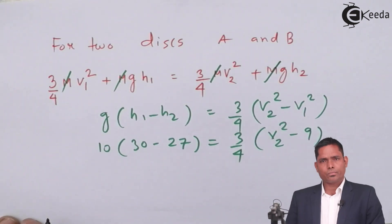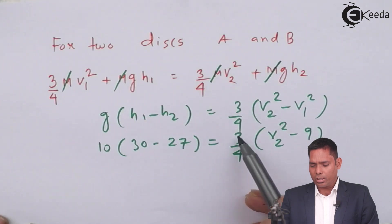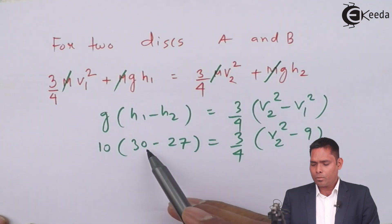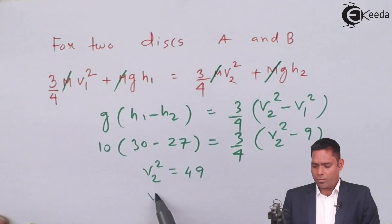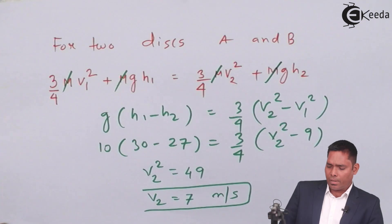Solving this, you'll get this is 3 and this is 3. They will cancel out. 4 times 10 that is 40 plus 9 that is 49. So V2 squared is 49 or V2 is 7 meters per second. So the answer to this question is 7.